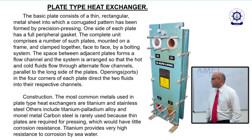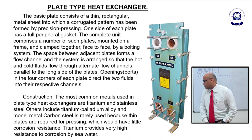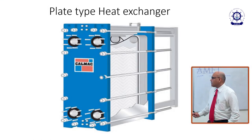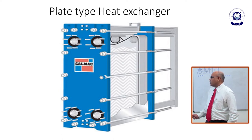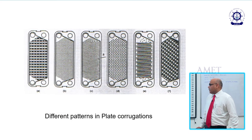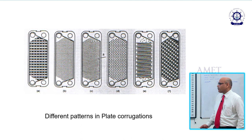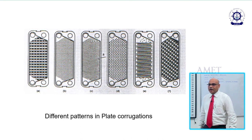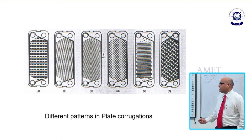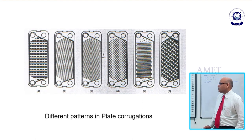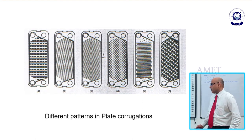This is the Alfa Laval plate type heat exchanger — one end of the plate is always fixed and the other end is free to float. These are the plates inside, showing different corrugation patterns. The corrugations increase the heat transfer area, so the net area is increased, efficiency increases, and heat transfer is more effective.